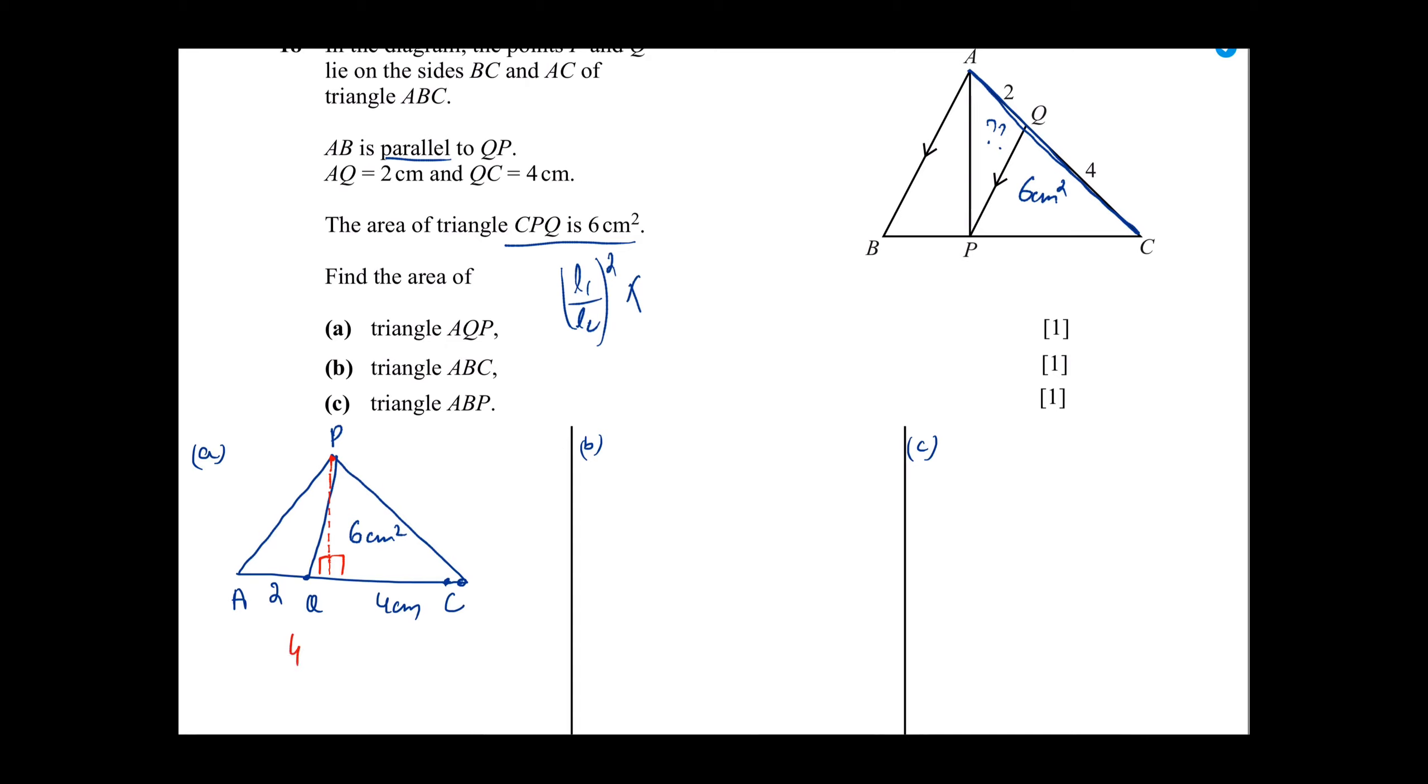The base is 4 where area is 6. The base is 2 and here is the area which will be x. Remember, this is base and this is area. So if you cross multiply, 4x is equal to 12 and x is equal to 3cm². This is a much more efficient and convenient way.